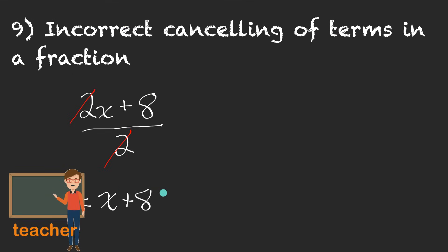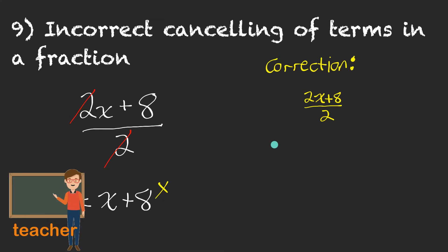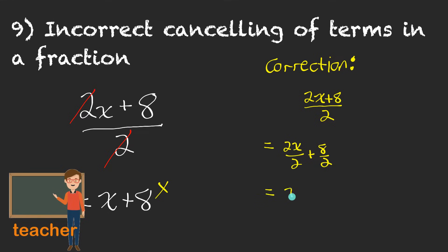No, sorry, that's not correct. This is actually a super common mistake — to forget to divide both of the terms by the denominator. You need to divide the 8 by 2 as well. One way you could do this so that you don't make that mistake would be to separate this into two fractions being added. Since the 2x and the 8 are both being divided by 2, I could separate this into 2x over 2 plus 8 over 2.